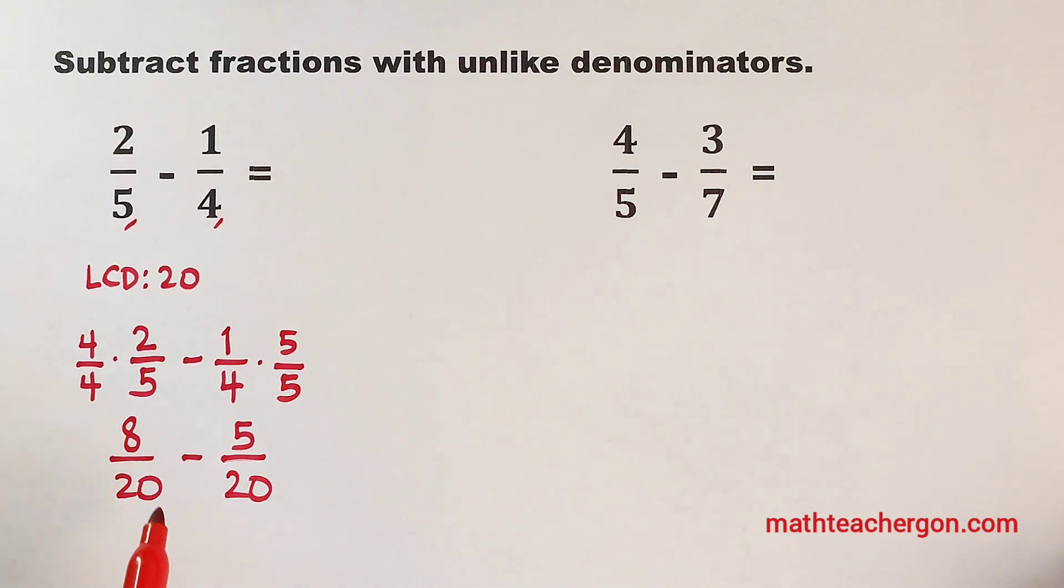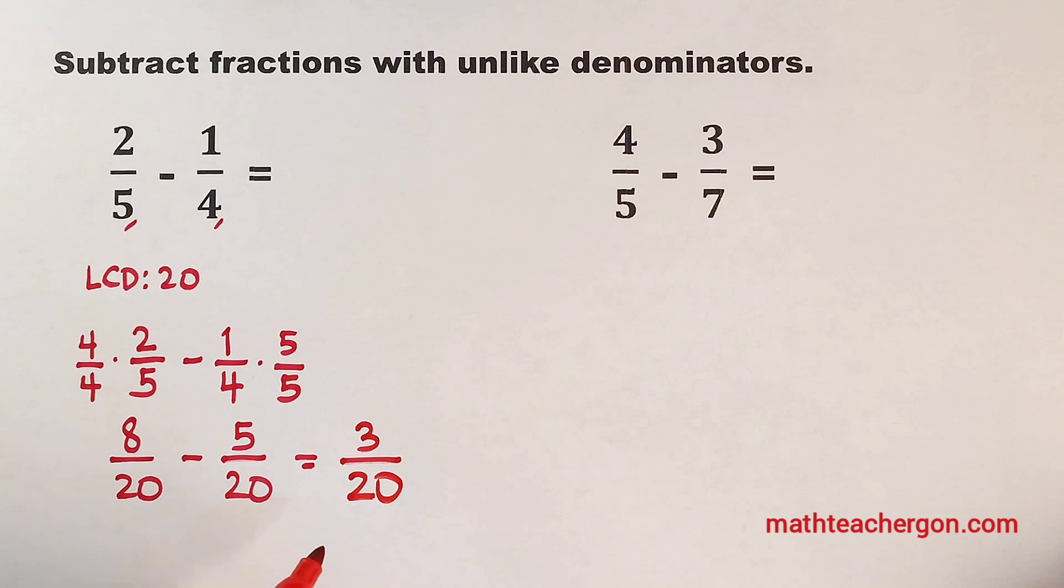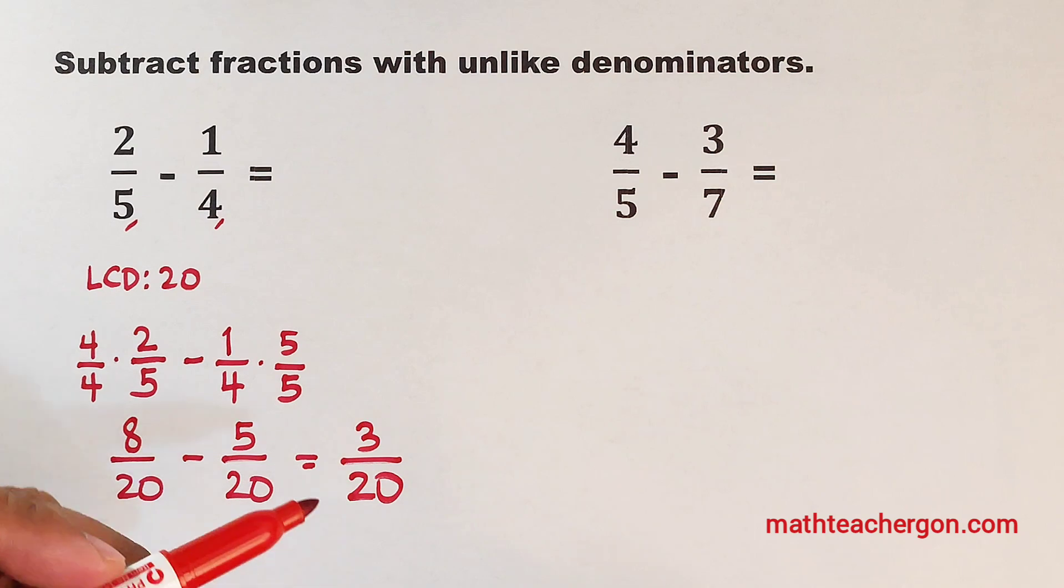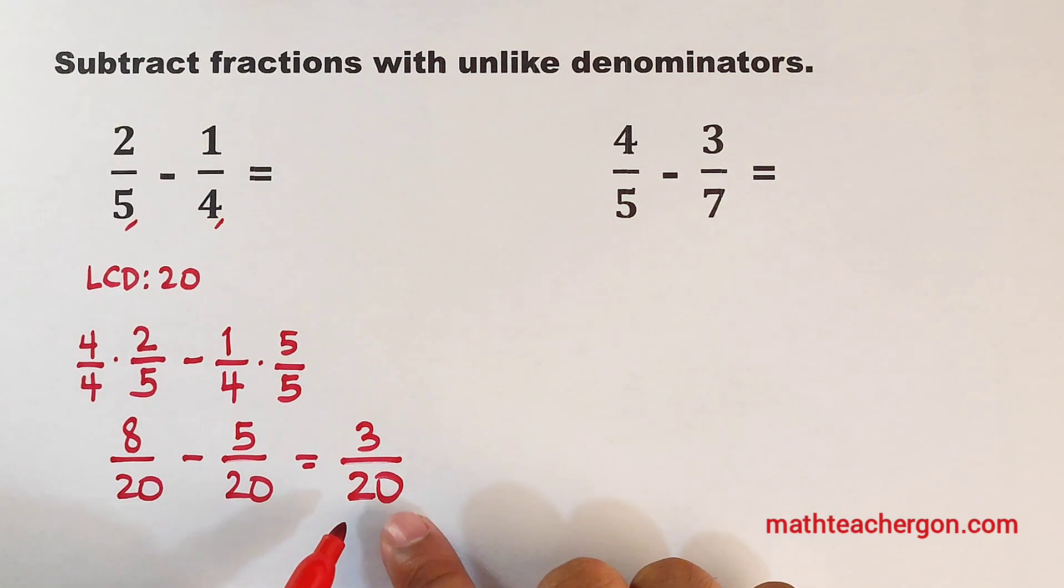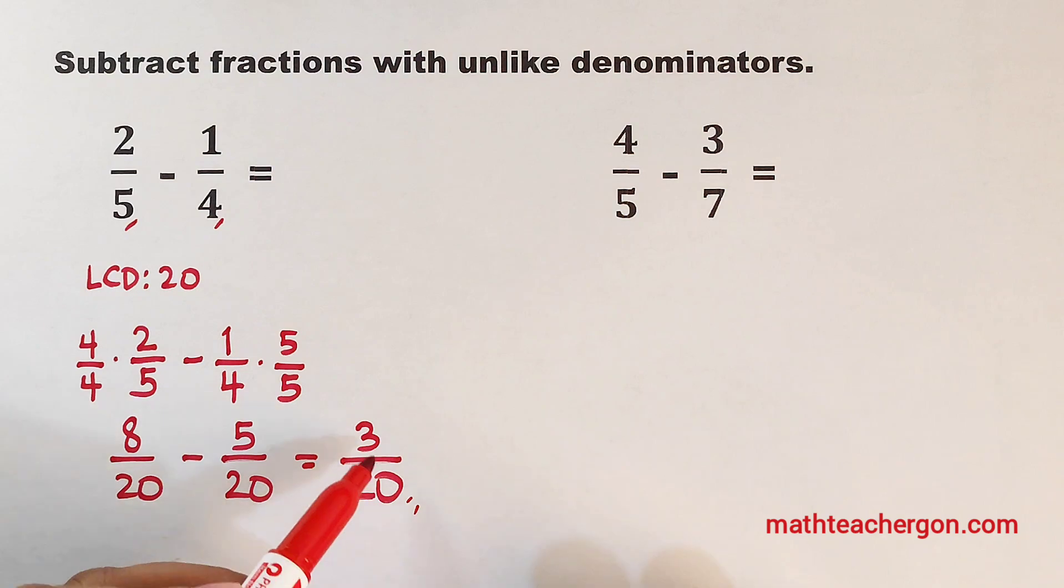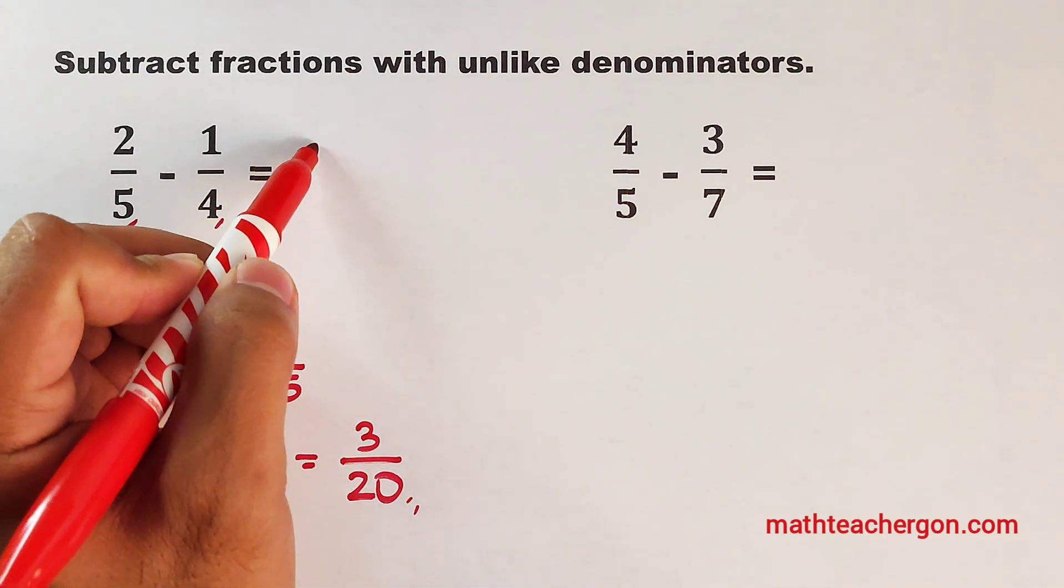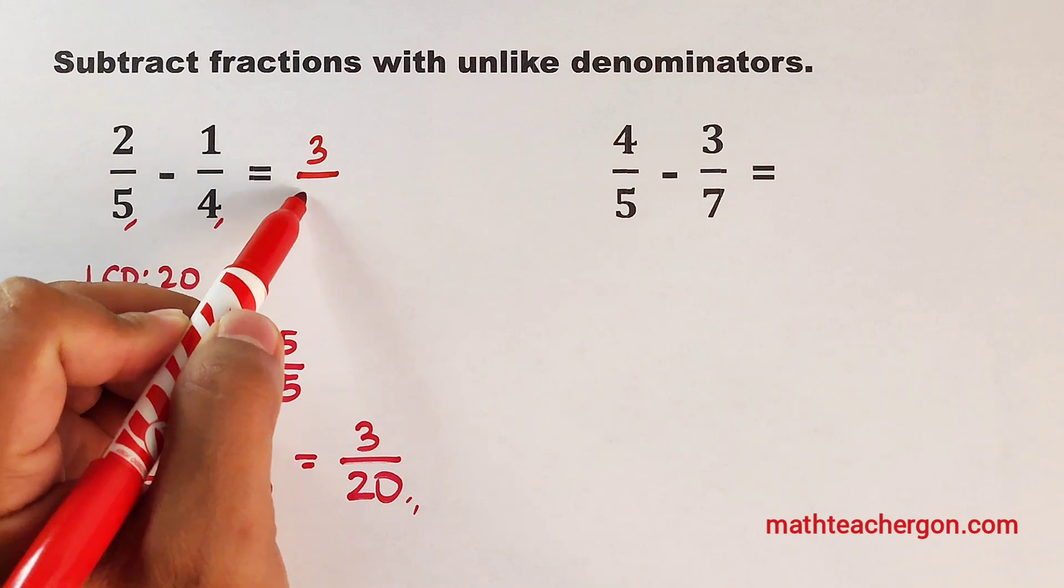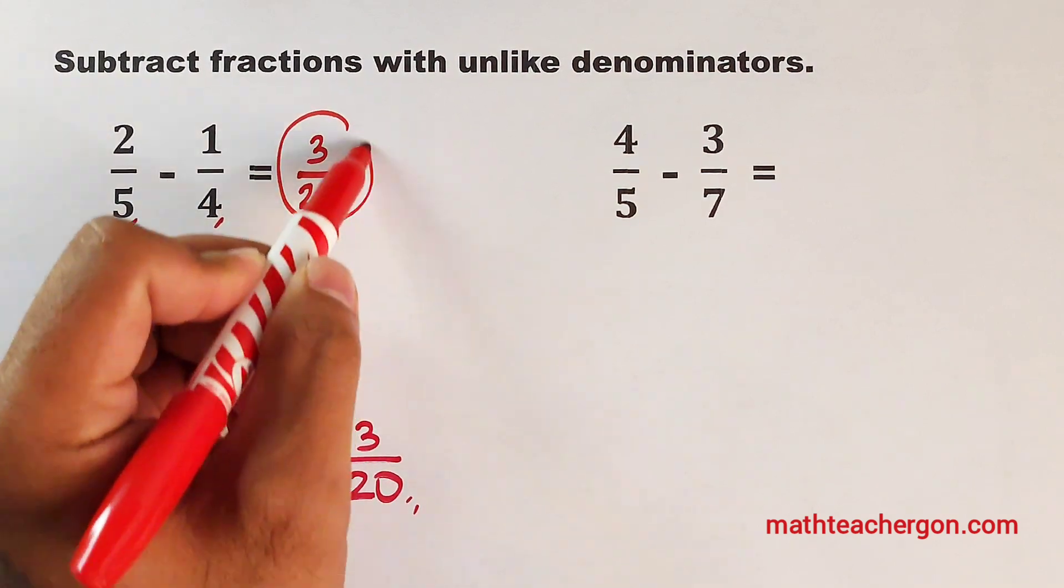So let's subtract the numerators. 8 minus 5, that would be 3. Then copy your common denominator. And as you can see, we have now 3 over 20. The final step is to check if this fraction can be still simplified. So right now, this is already in the simplified form. So we declare that 3 over 20 is the final answer.